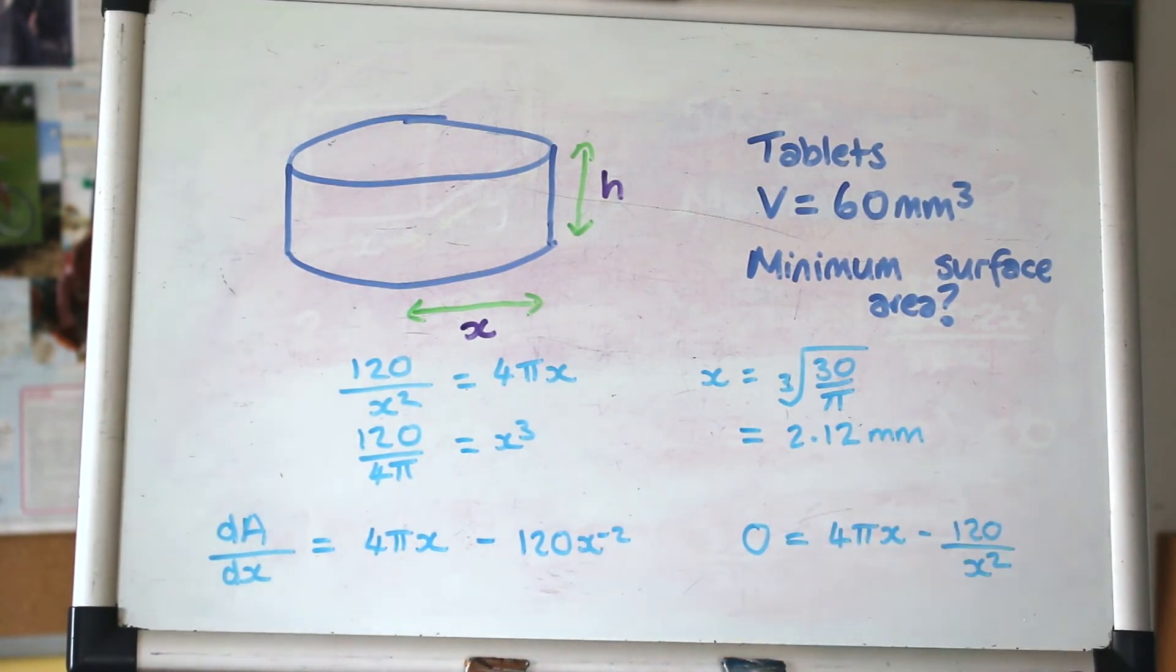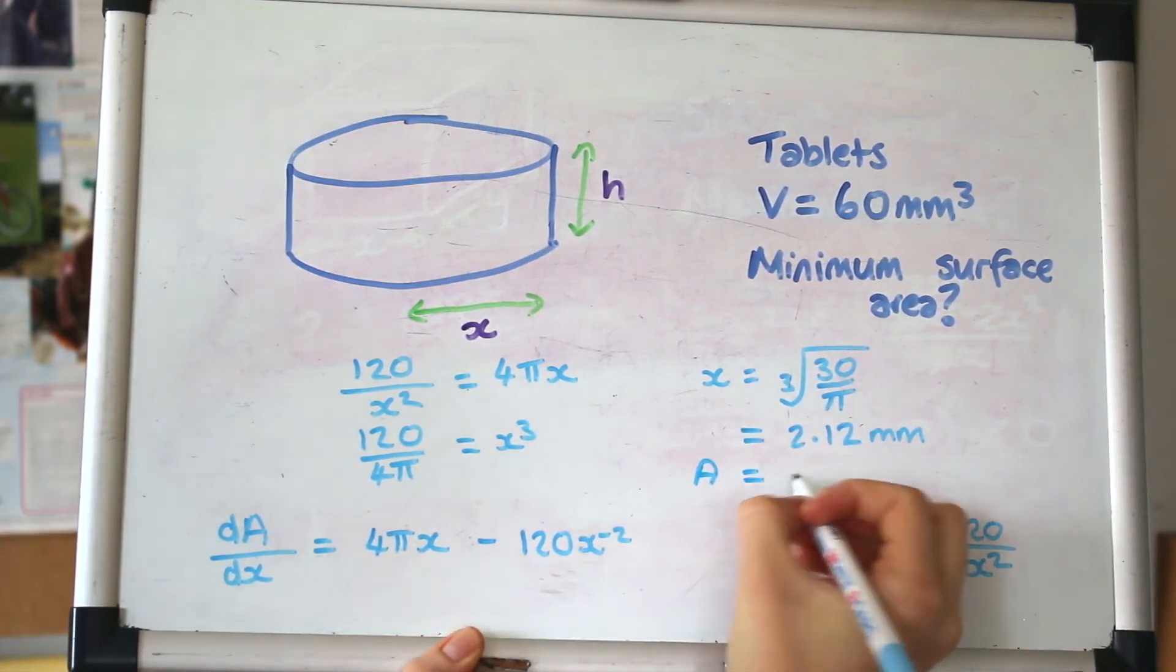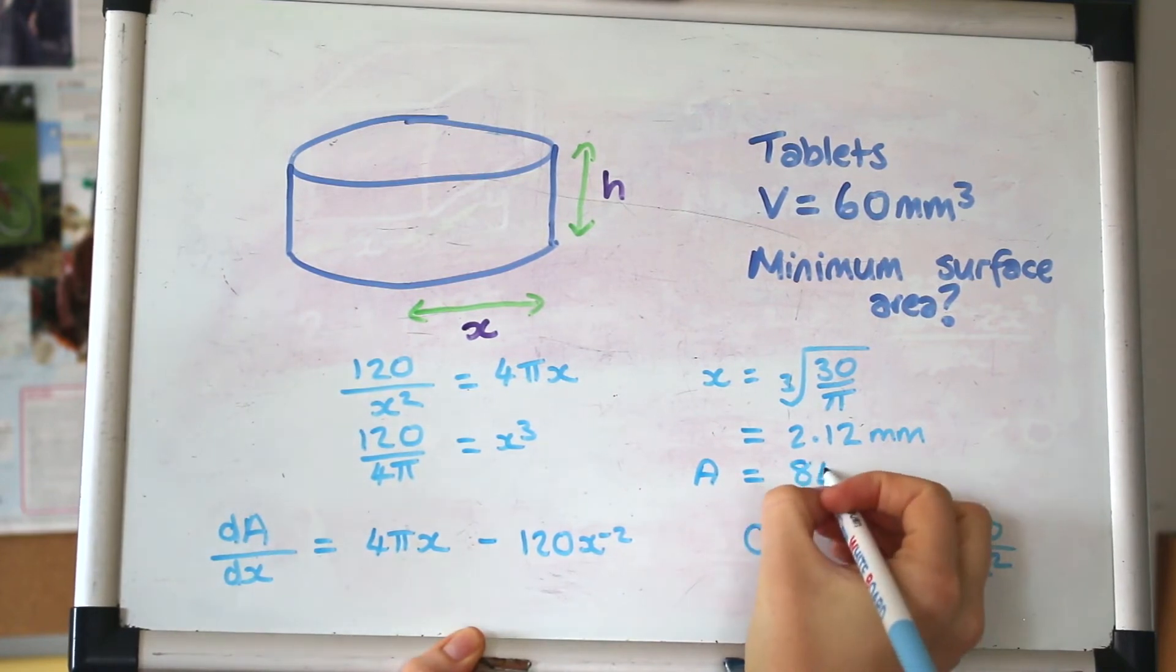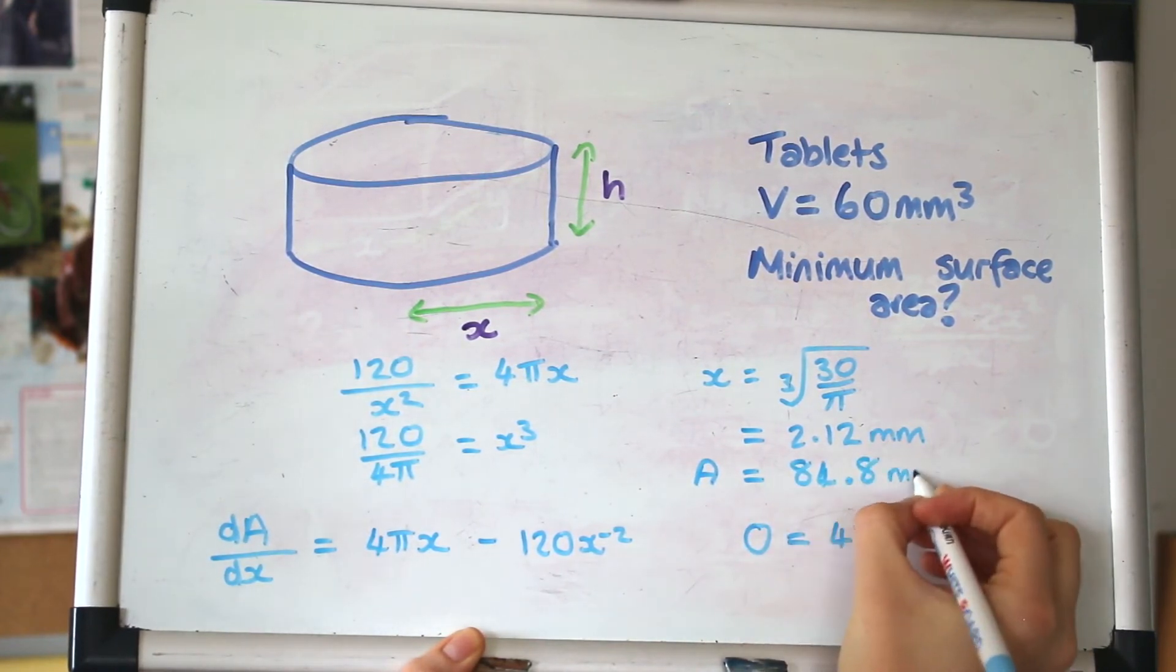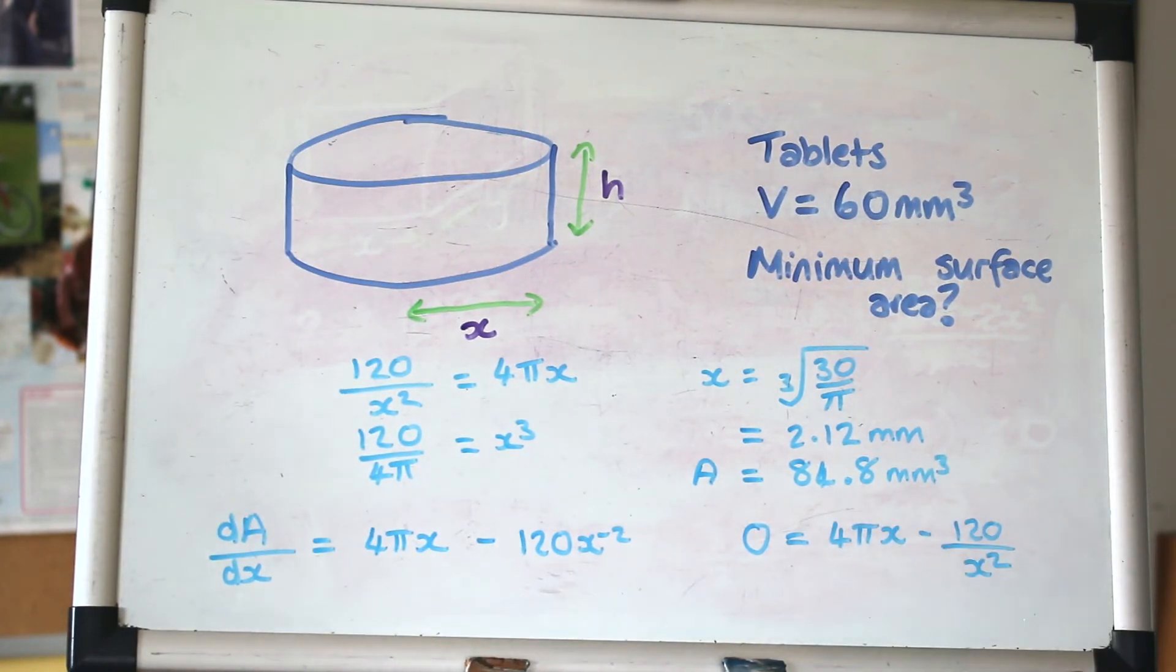If we want the minimum surface area, we can put that back into our expression for the surface area. Putting that back in, I get 84.8 mm³. A good final step is to prove that it's definitely a minimum. We're going to take the second derivative and cross our fingers and hope for the best.